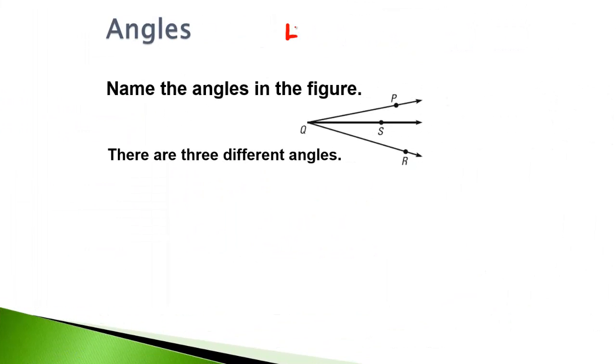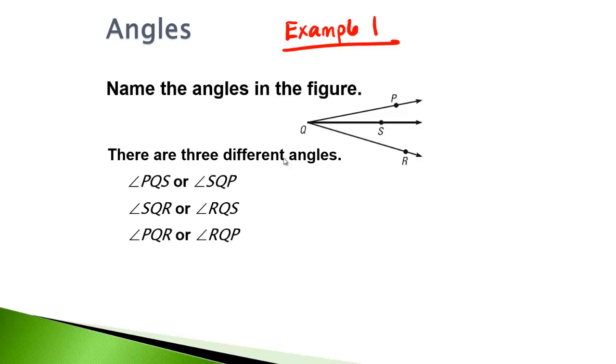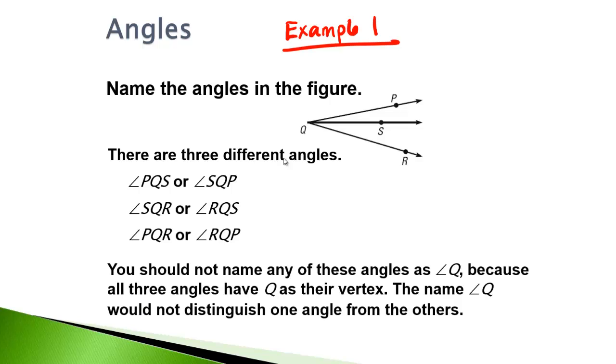So now this is actually Example 1. Anytime you see the word example, you definitely need to write that down and understand it. I want you to name the angles in the figure, all the angles. There are three different angles, so pause it here, write out the three angles in your notes, and see if they coincide. Your first one could be angle PQS or angle SQP - it's the same angle. The second one would be angle SQR or angle RQS. And the third one would be angle PQR or angle RQP. You should not have any of these angles as angle Q because all three angles have Q as their vertex. The name angle Q would not distinguish one of the angles from the other.